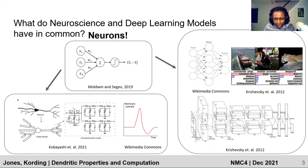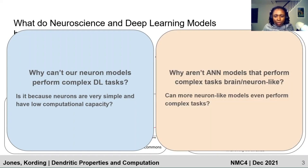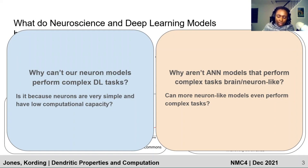Within this tension, we might ask certain questions such as: why can our neuron models not perform complex deep learning tasks? Is it because neurons are very simple and have low computational capacity? And why aren't ANN models that perform complex tasks brain-like or neuron-like? Can more neuron-like models even perform complex tasks?